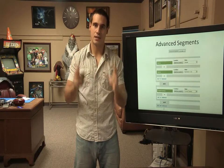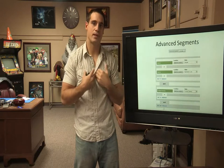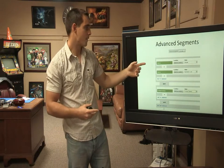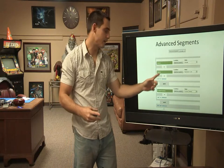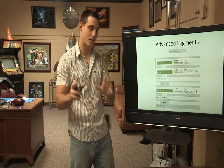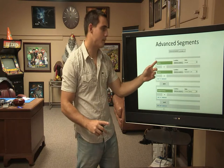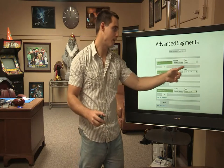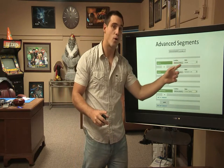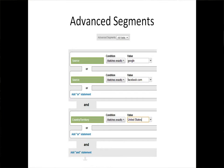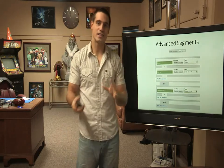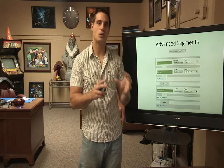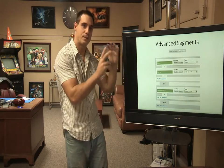For example, you can look only at people who find you on Google in the United States and see what those people are doing, versus people who find you on Facebook in the UK — a completely different thing may be happening. I use an OR connector here to look at people who find me on Google or Facebook and are located in the United States, and then I can see what's going on with that specific segment.